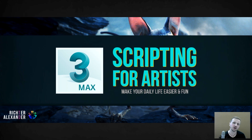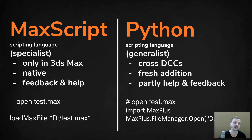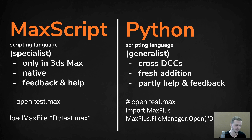Hello and welcome to my introduction series of scripting for artists. My name is Alexander Richter and today we want to have a glimpse look into scripting in 3ds Max. Let's have a look at the scripting languages we can use. The first one would be MAXScript, which is best used for specialists since it can only be used in 3ds Max, but on the flip side it's a native language so it's well integrated and gives you quite a lot of feedback and help.